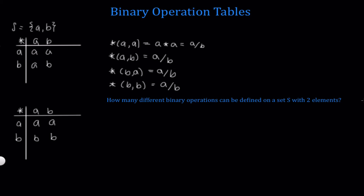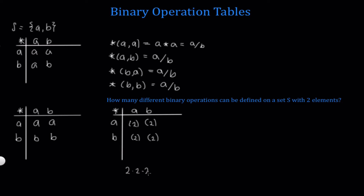So now let's ask: how many different binary operations can be defined on a set S with two elements? If we look at this binary operation table, we have two options for A star A, two options for A star B, two options for B star A, and two options for B star B. Since each unique ordering is a different binary operation, that gives us two times two times two times two, or two to the fourth, different binary operations. And of course two to the fourth is two to the two squared, which equals 16.